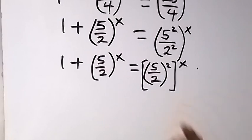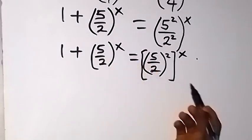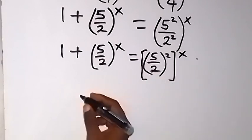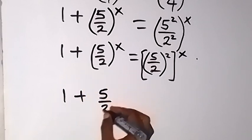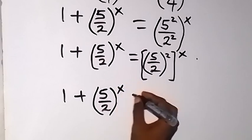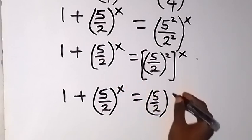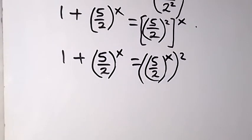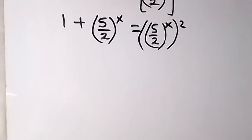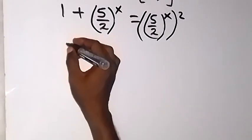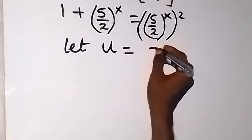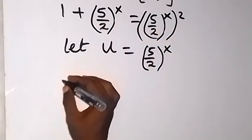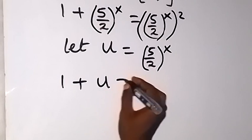We can see from here we have 5 over 2 raised to power x on both sides. By interchanging the power, since we multiplied, we have 5 over 2 raised to power x. Now let's let u equal to 5 over 2 raised to power x. We can then write: 1 plus u equals u squared.